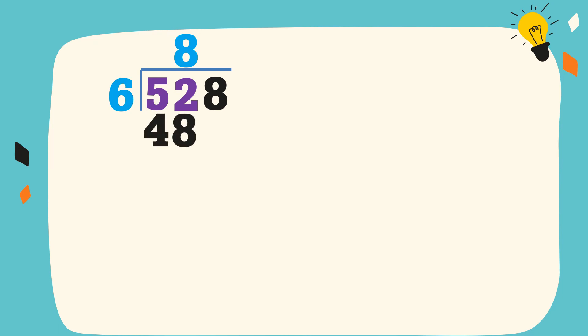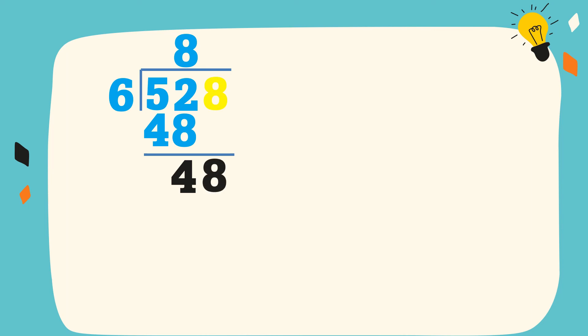8 times 6 is equal to 48. Then let's subtract. 52 minus 48 is equal to 4. Then bring down 8.